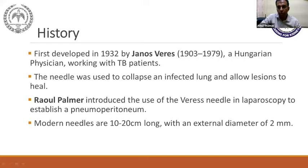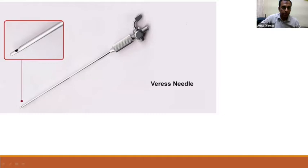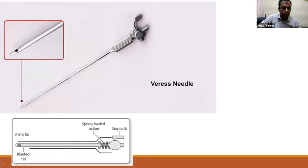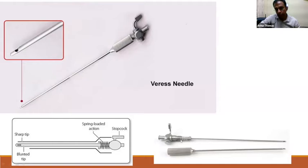For pediatric patients the needle is around 8 to 12 centimeters, and for adults 15 to 20 centimeters. The external diameter is around two millimeters. In this picture of the Veress needle you can see there is a stopcock through which we infuse dialysis fluid or saline. At the tip it is blunt, and there is an eye of the Veress needle through which fluid goes into the peritoneal cavity.